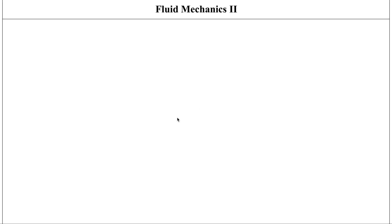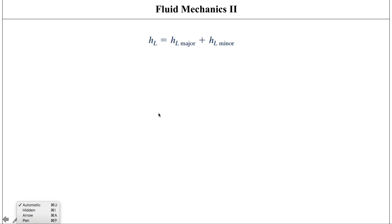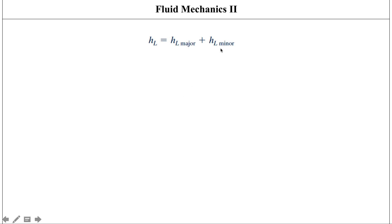In the previous video we talked about head loss associated with long straight sections of pipe, which is called major losses. In this video we're going to be talking about minor losses. The difference between the two is that with minor losses you are accounting for head loss through different pipe components. We're going to look at different methods through which you can determine these minor losses that occur for different piping systems.